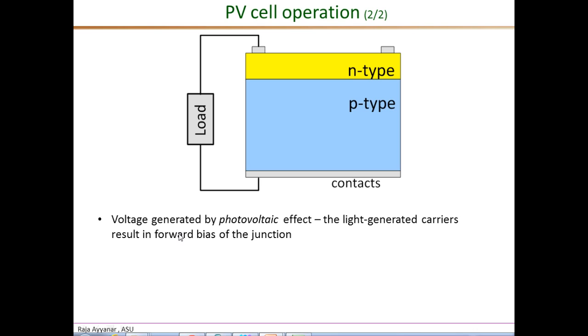Now in a PV cell, this voltage is generated by the photovoltaic effect. So essentially, because of the separation of charges at the P-n junction, there is a larger number of electrons on the N-type and a large number of holes on the P-type. This produces an electric field which is in opposition to the electric field originally existing at the P-n junction.